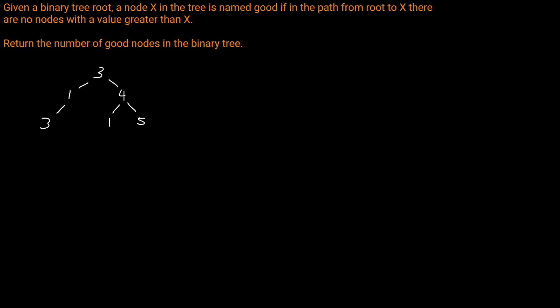Let's read the question prompt. Given a binary tree root, a node X in the tree is named good if in the path from root to X there are no nodes with a value greater than X. Return the number of good nodes in the binary tree.